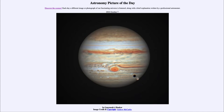Jupiter right now is at opposition and perihelion. Opposition means it is opposite to the sun in the sky, and therefore rises at sunset and is up all night long. An object at perihelion is at its closest to Earth, meaning it's going to look a little bit larger. So we're getting a very good view of Jupiter right now because these two happen to coincide — Jupiter is up all night long and visible at the same time that it is at its closest.